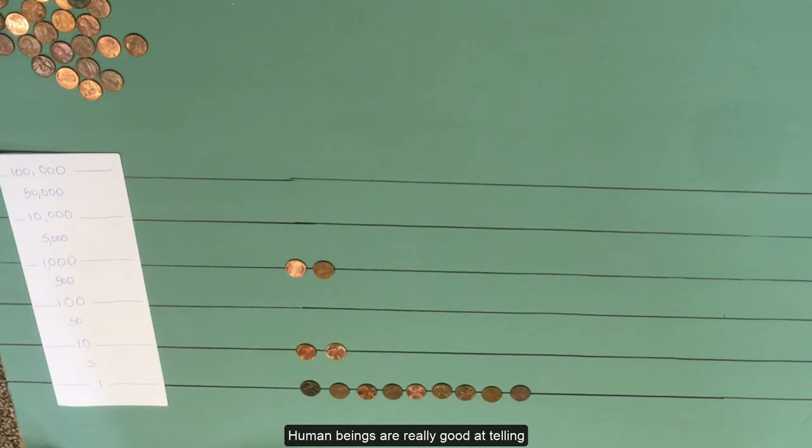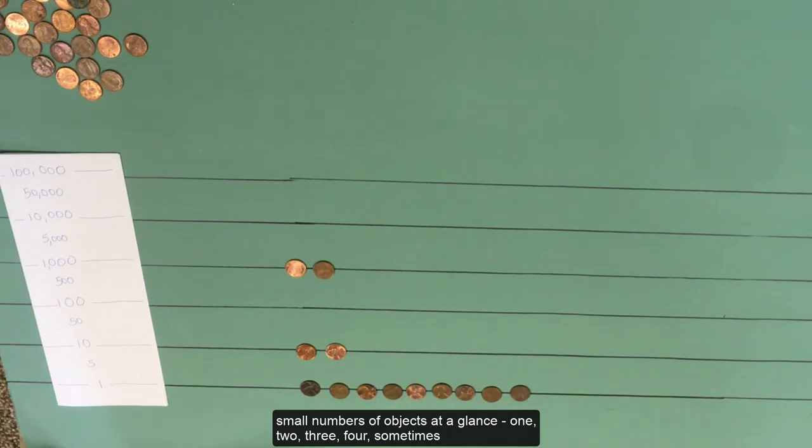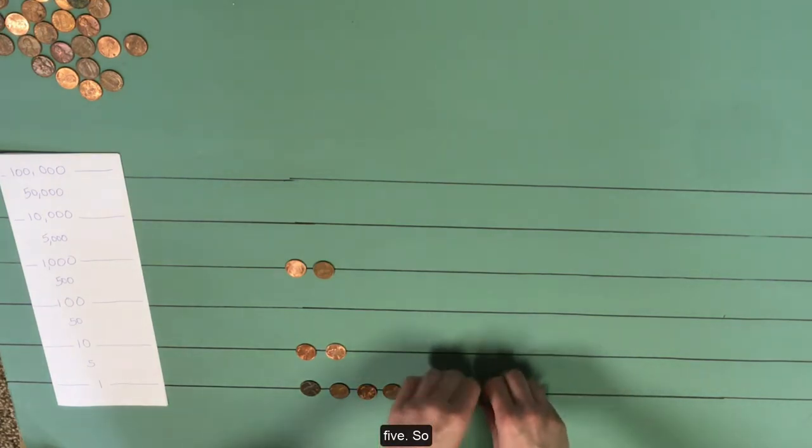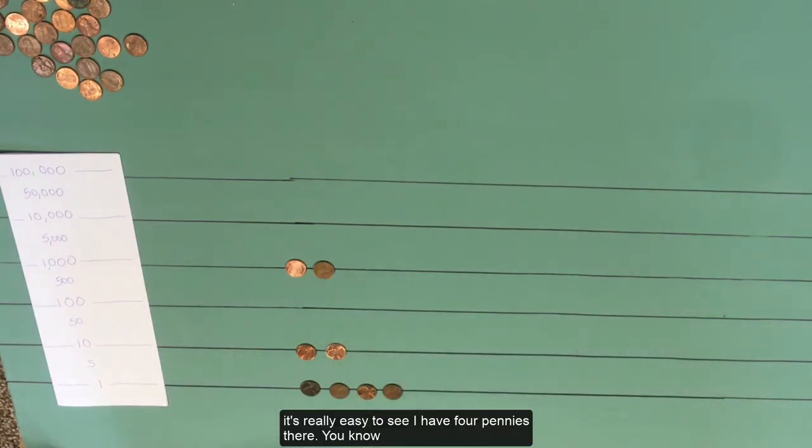It's really hard to see that at a glance. Human beings are really good at telling a small number of objects at a glance. 1, 2, 3, 4, sometimes 5. So it's really easy to see I have 4 pennies there. You know I have 5 pennies here because I just had 4 and I've only added 1. But at this point, some people will have to count.